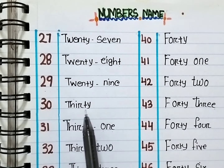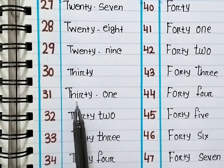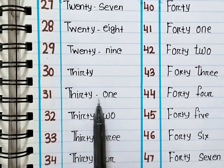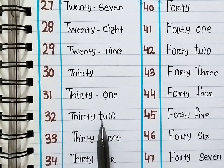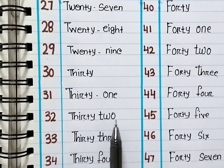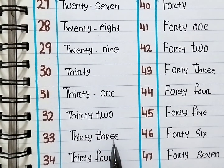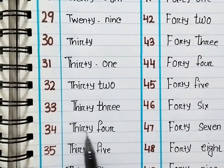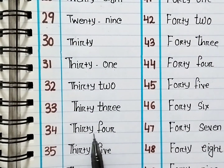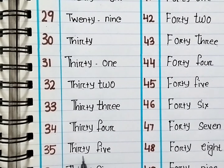30. T-H-I-R-T-Y 30. 31. T-H-I-R-T-Y O-N-E 31. 32. T-H-I-R-T-Y T-W-O 32. 33. T-H-I-R-T-Y T-H-R-E-E 33. 34. T-H-I-R-T-Y F-O-U-R 34. 35. T-H-I-R-T-Y F-I-V-E 35.